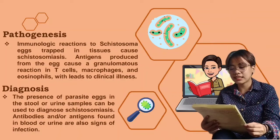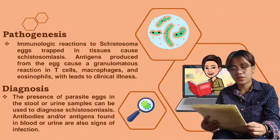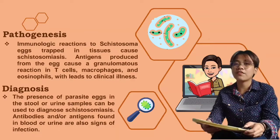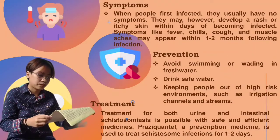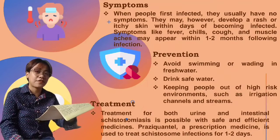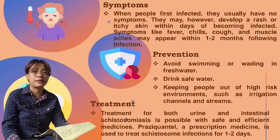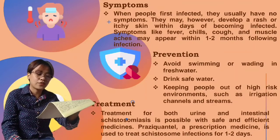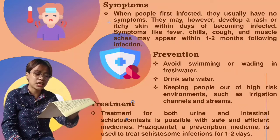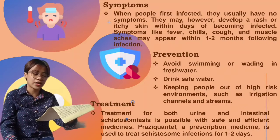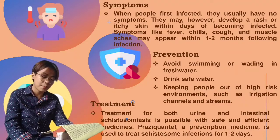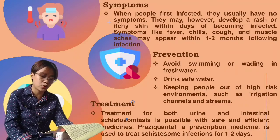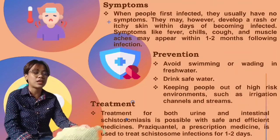In fresh water, excreted eggs hatch, releasing miracidia, the first larval stage, which infects snails. For the symptoms, when people are first infected they usually have no symptoms. They may however develop a rash or itchy skin within days of becoming infected. Symptoms like fever, chills, cough, and muscle aches may appear within 1 to 2 months following infection.